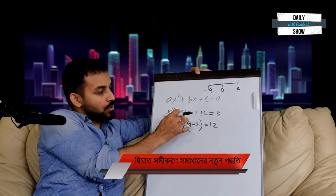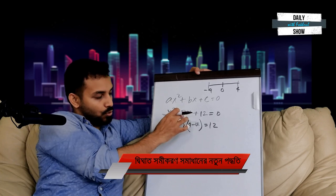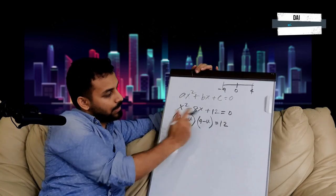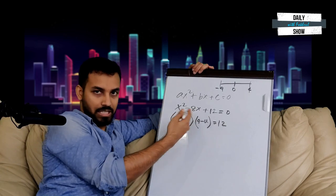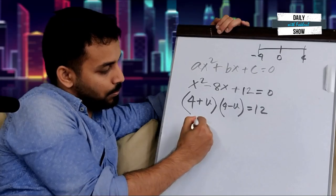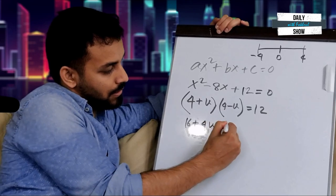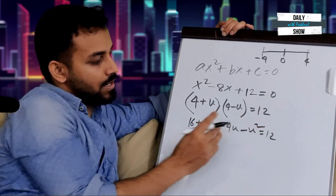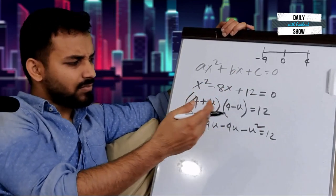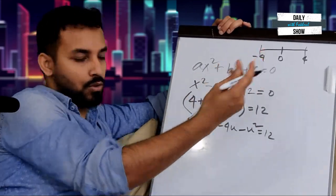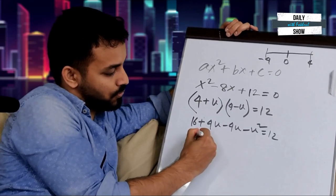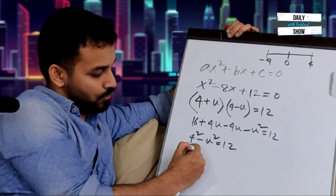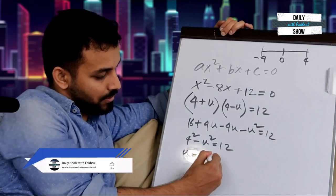Let me show you the new method. We use the formula a plus b times a minus b equals a squared minus b squared. So 4 squared minus u squared equals 12.